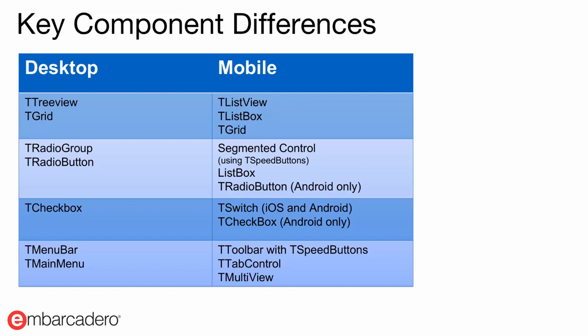On the desktop, if you're currently using TRadioGroup or TRadioButton, we recommend creating a segmented control using TSpeedButtons with a group property, or using TListBox with checkmarks. On Android you can also use radio buttons, though they're really not used on iOS. If you currently have a checkbox in your desktop application, you'd be looking at using a TSwitch control for both iOS and Android. If you're just building an Android companion application leveraging app tethering with your VCL Windows application, you could also use TCheckBox. For overall application menus and navigation, if you're currently using TMenuBar or TMainMenu on the desktop, on mobile you'd look at a toolbar with speed buttons, the tab control, or the multi-view component.